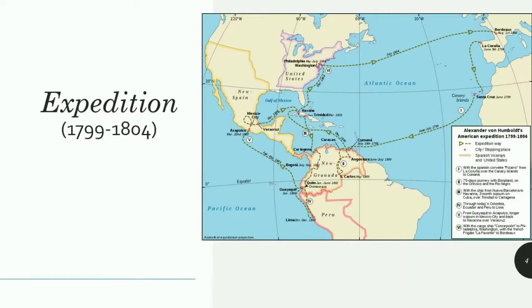Now let's talk about his expedition, which is the most important part of his life. He contributed so many things across so many subjects. Humboldt had a gift for exceptionally sharp observation and in fieldwork he was unsurpassed. In 1798, Humboldt, along with French botanist A. Bonpland, reached Madrid. On his way to Madrid, he made daily observations of temperatures and altitudes.